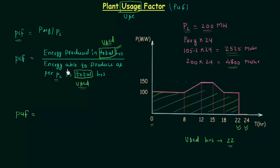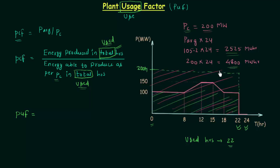In the denominator we have to find energy able to produce as per PC in used hours. This is not the same as energy able to produce as per PC in total hours. PC is equal to 200 MW, and to find energy produced as per PC in used hours we find this rectangular area. If you compare this area with the area in total hours, there is an extra area added in total hours. So the areas are not the same, and we find the area corresponding to PC in used hours.